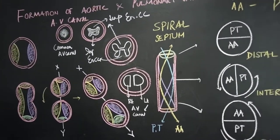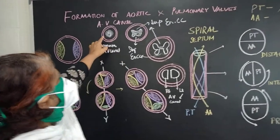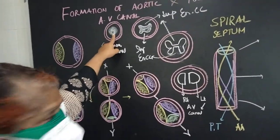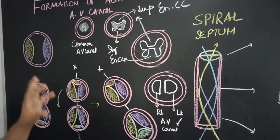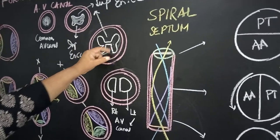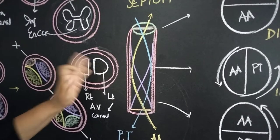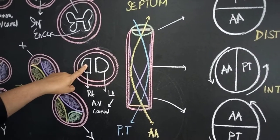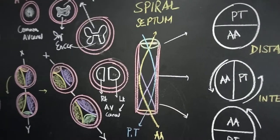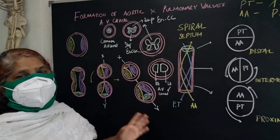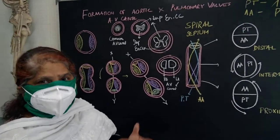Now, how is the atrioventricular canal divided? The atrioventricular canal is continuous with both the atrial and ventricular cavities. This common atrioventricular canal is divided by the endocardial cushion — first superior and inferior cushions appear, then it is cut off into a right side and a left side atrioventricular canal. The right is guarded by the tricuspid valve and the left by the mitral or bicuspid valve.